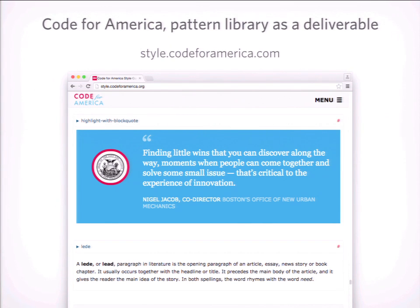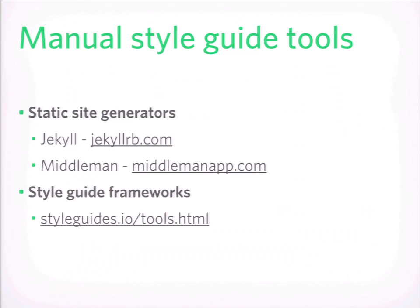We also saw this with Code for America, who recently put up their style guide — built by a company called Clear Left. Interestingly, they didn't actually do the implementation; they were hired just to do the design work. They built a really awesome pattern library as the deliverable. They did all the research and discovery, did the design work, and then as a deliverable for whatever team was going to implement it, they had this pattern library to reference. For manual style guides with a static site approach, I've seen people using Jekyll and Middleman, plus a lot of different tools to help you get started.